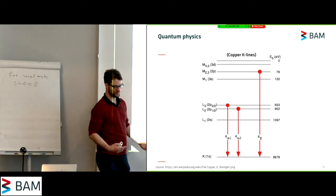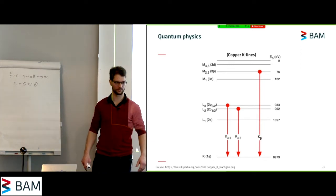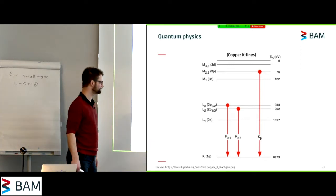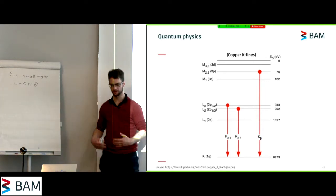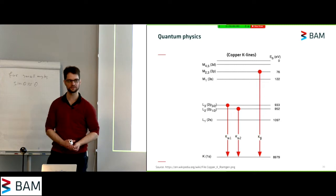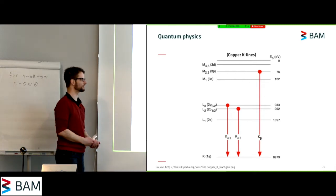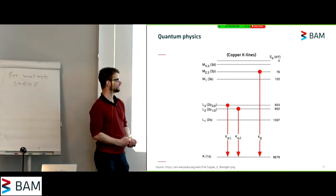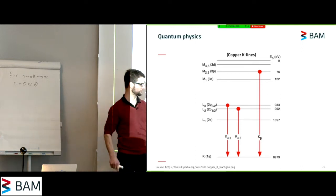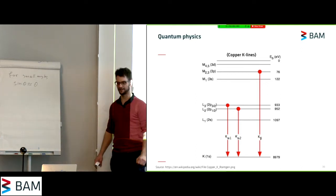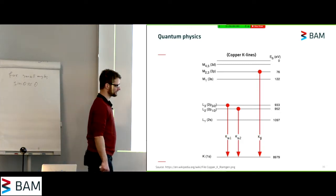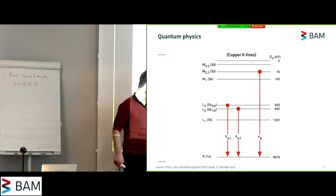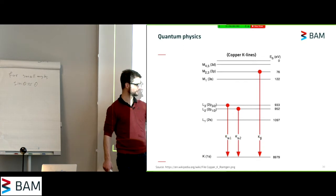So here we see the emission spectrum or some of the emission lines of copper. So we have k-alpha-1 and k-alpha-2, which are the most prominent and most commonly used emission lines. And we have k-beta as well, which is a higher energy but less likely transition.